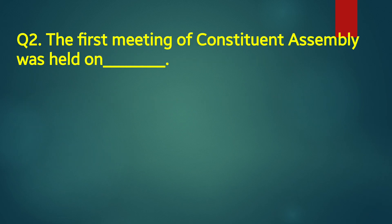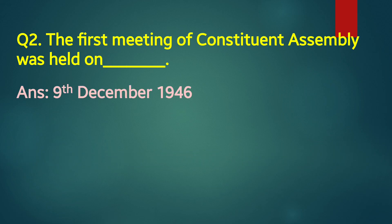Second one — the first meeting of the constituent assembly was held on blank. Answer: 9th December 1946.